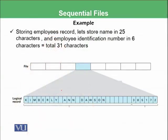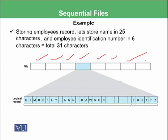So let's have an example of a sequential file and how we can store data. For example, you want to store an employee record and let's say you have many, many employees — in this example, we have eight employees. We are interested to store the employee name and its social security number.